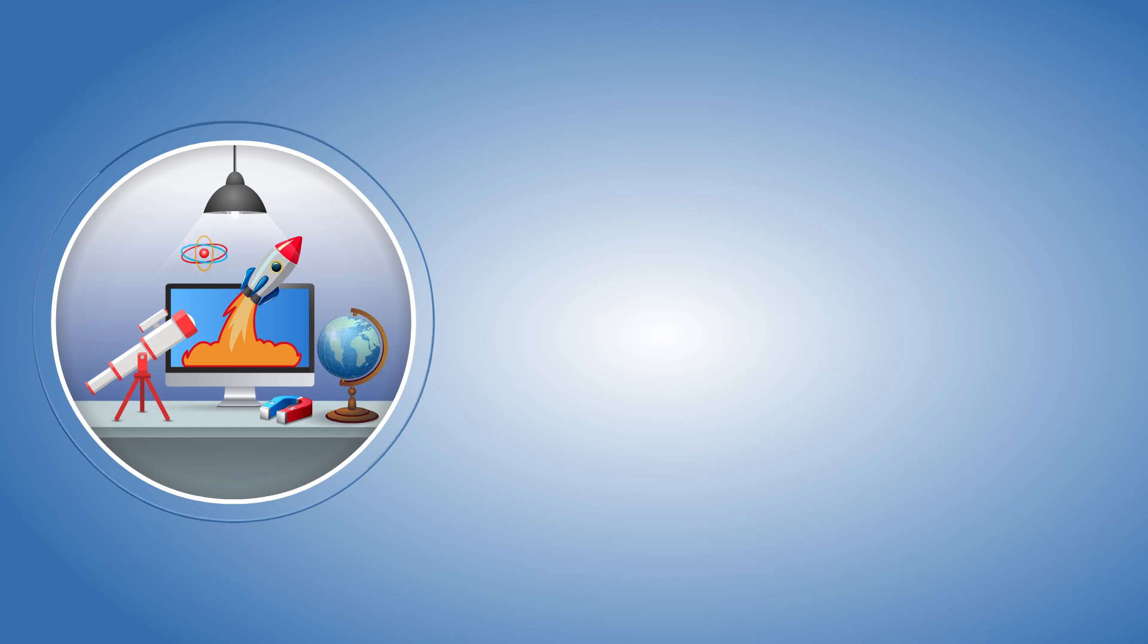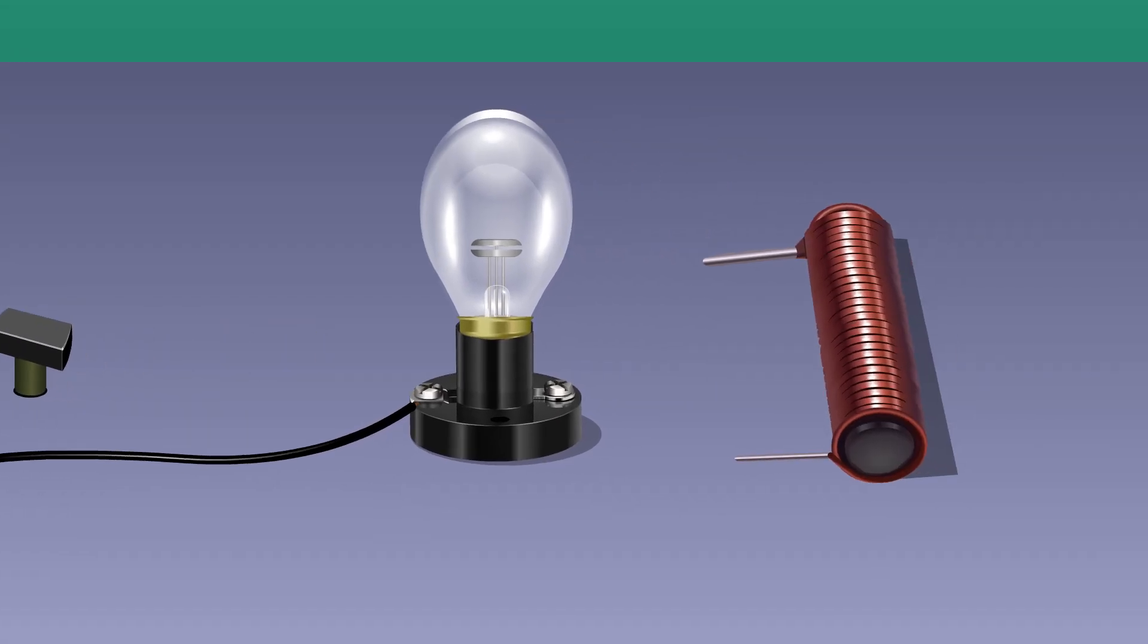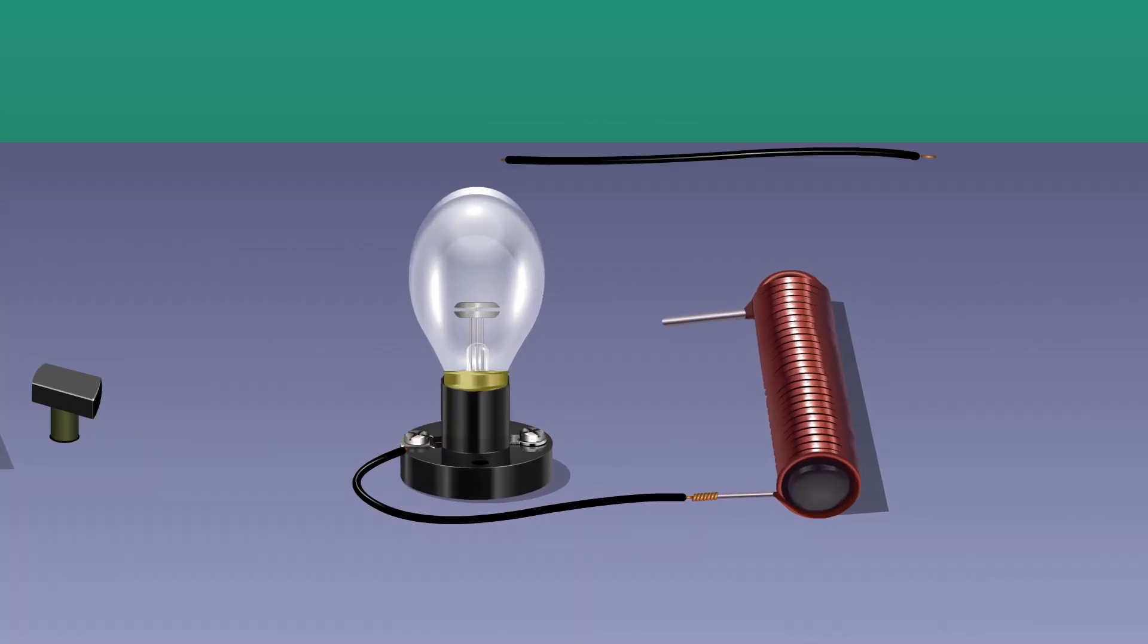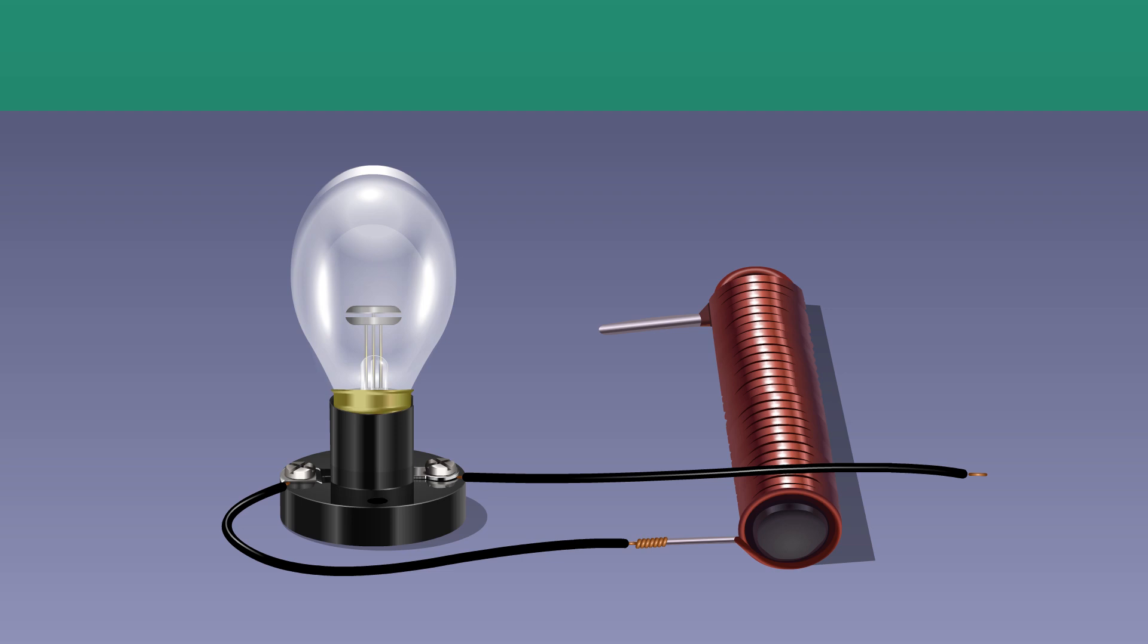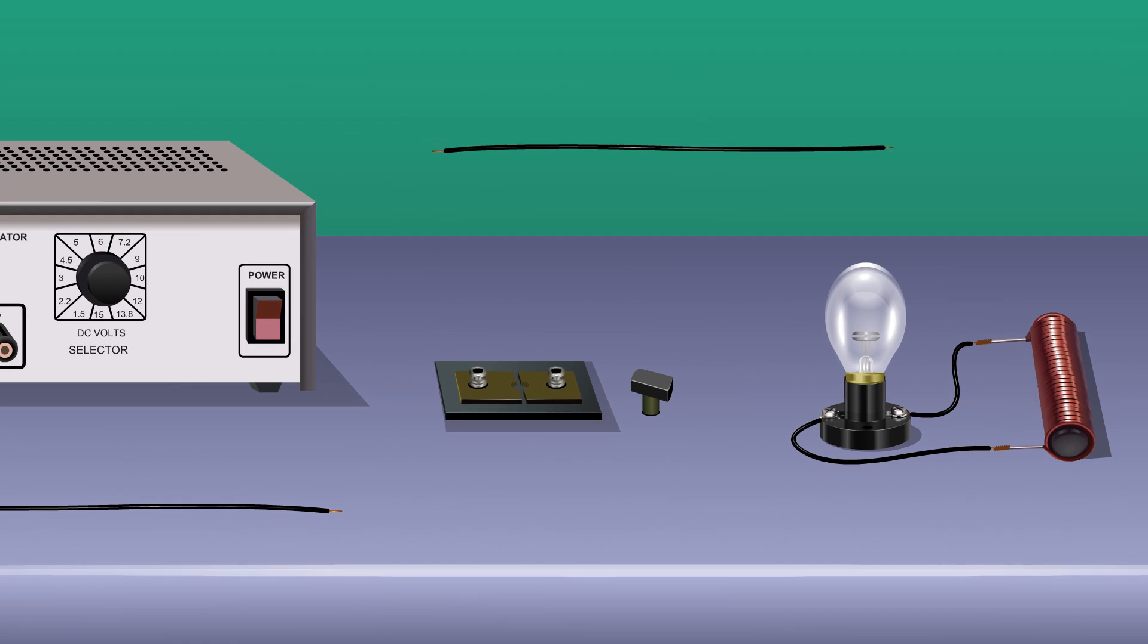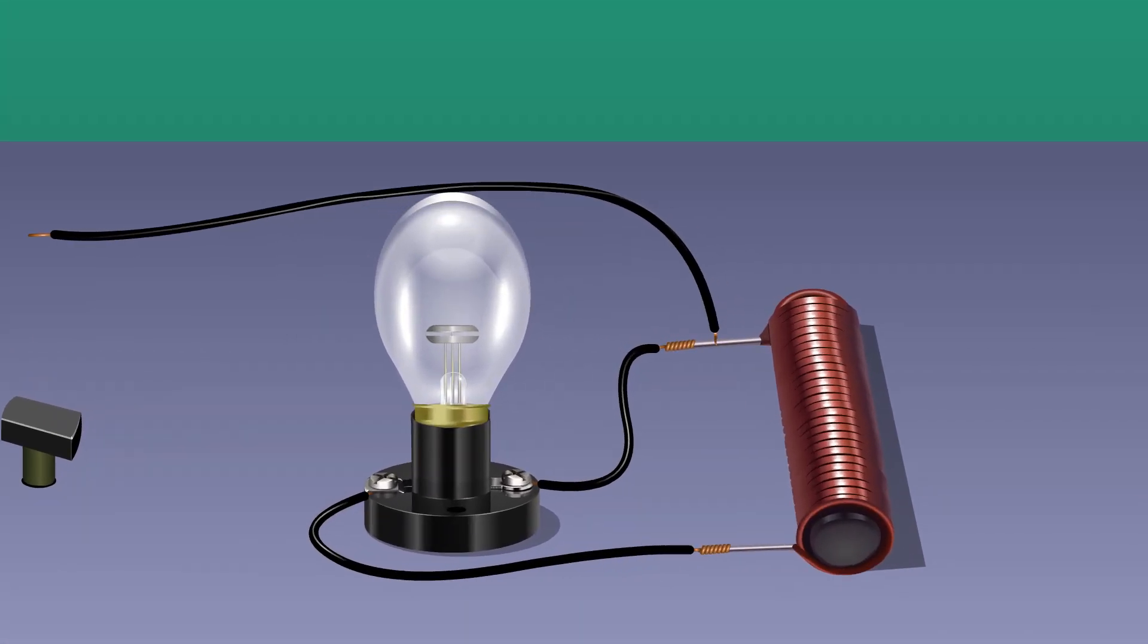Procedure: Connect the neon lamp across the two terminals of an inductor. Connect one terminal of the inductor to the negative terminal of a battery eliminator.